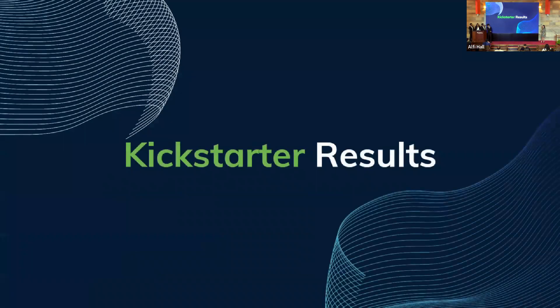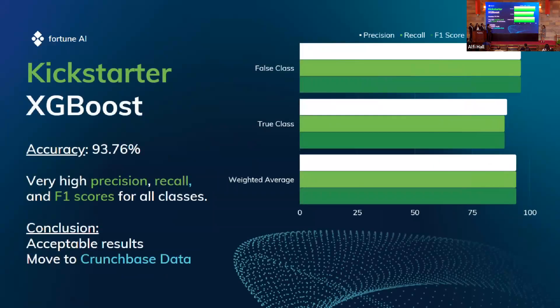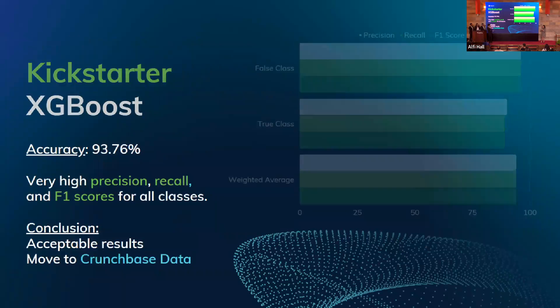For Kickstarter, done last semester, we achieved a high accuracy of about 93.76%, with very high scores in Precision, Recall, and F1 as well. We considered these very acceptable results, integrated them with the web app, and then proceeded with the Crunchbase model.